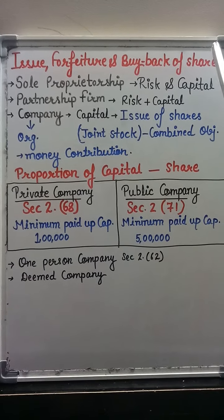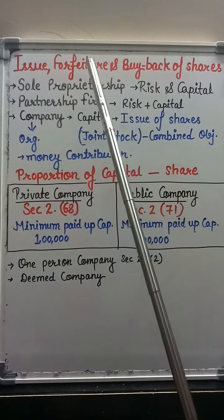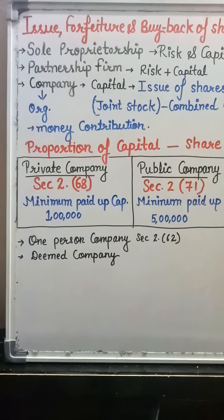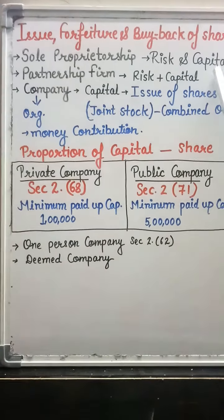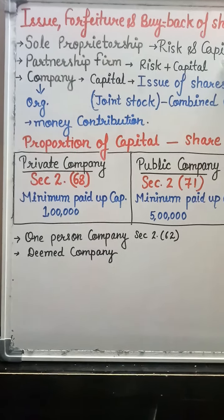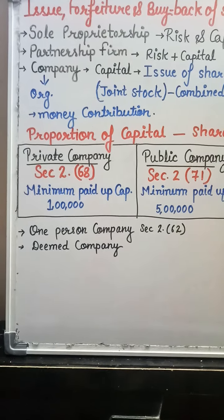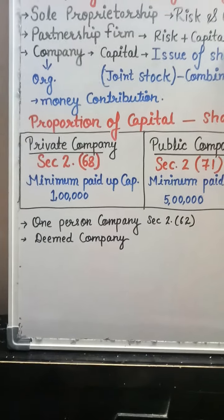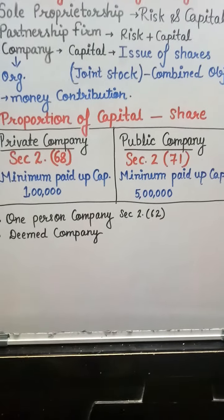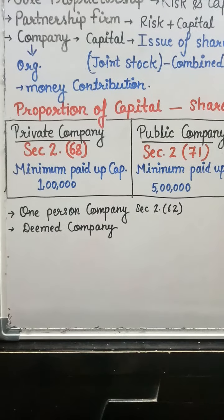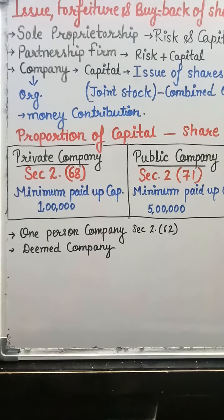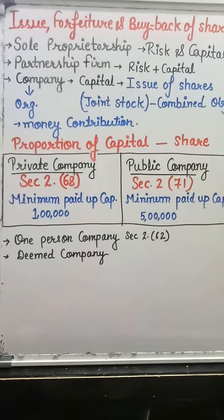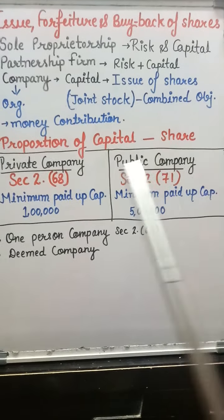The most common forms of business organizations are sole proprietorship, partnership firm, and company. In sole proprietorship, the entire capital is contributed by the sole trader and the total risk is borne by the sole proprietor. In a partnership firm, capital is contributed by the partners in their mutually agreed proportion and each partner is severally and jointly liable for the risk. The main source of raising capital for a company is shares.